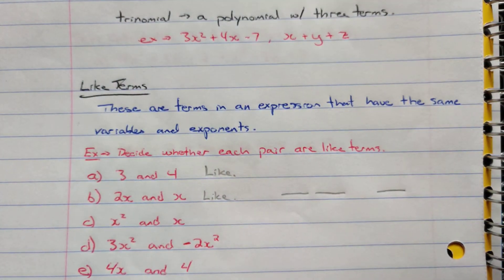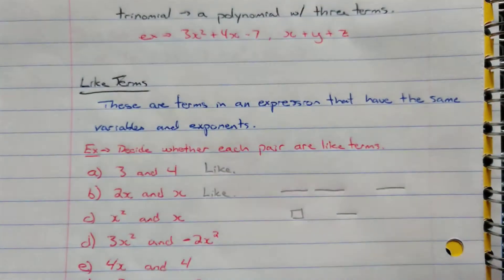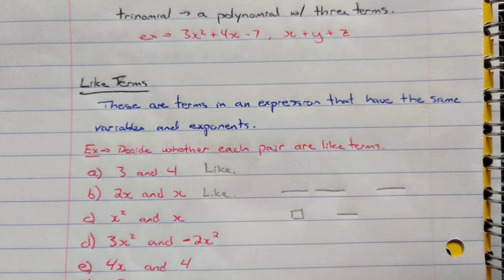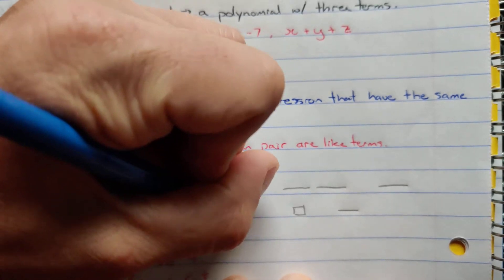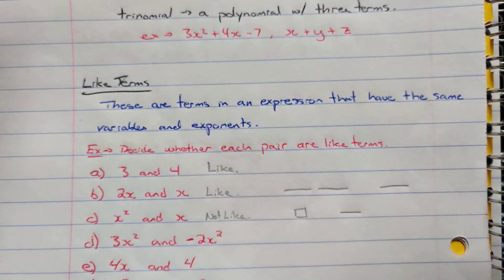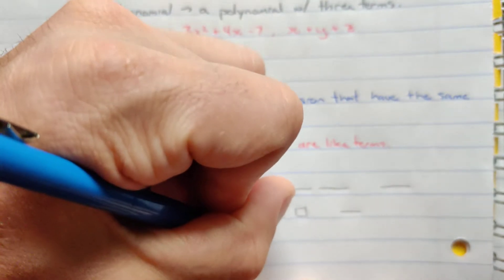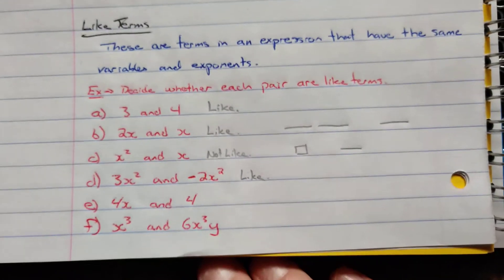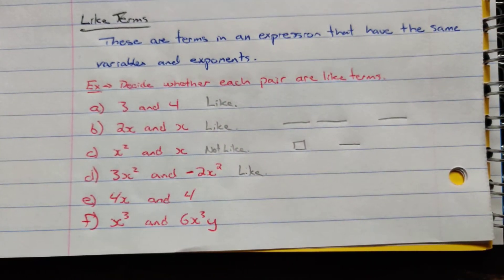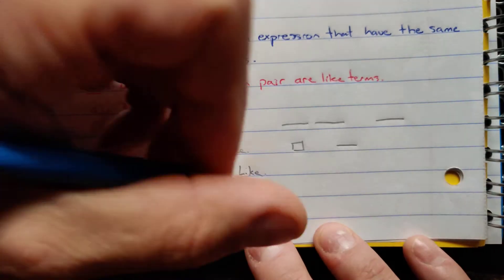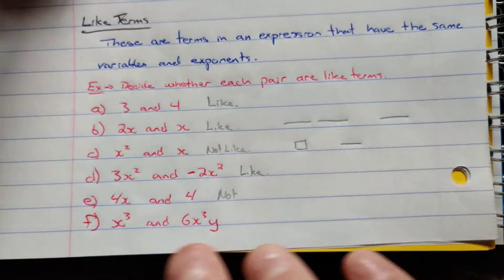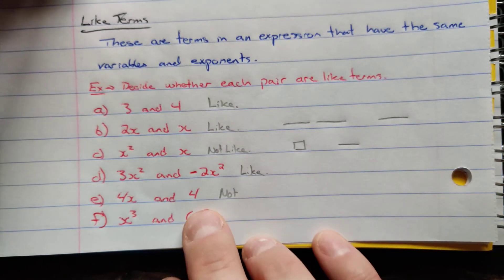x squared and x — the exponents are different. x squared you should picture as a square, and x as a line. A line and a square are not the same thing, so these are not like terms. 3x squared and negative 2x squared — both are x squared, so picture squares; these are like terms. 4x and 4 — the numbers are the same but the variable parts differ; 4x is a line, 4 is just a number, so not like terms.